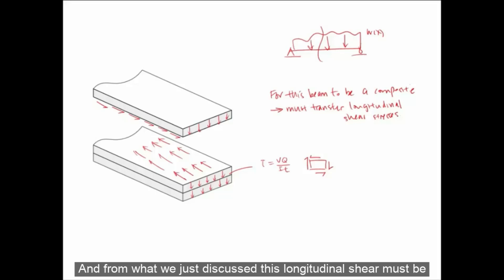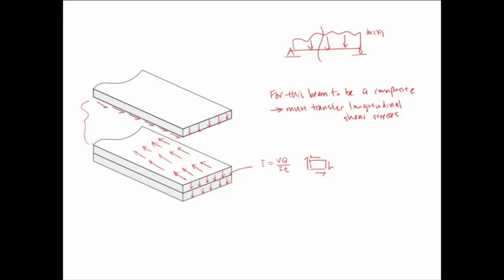And from what we just discussed, this longitudinal shear must be resisted by some kind of bonding agent over the area of the longitudinal cut. And now we can talk about the longitudinal shear force on the interface area, which is between the two boards and within a length of L.